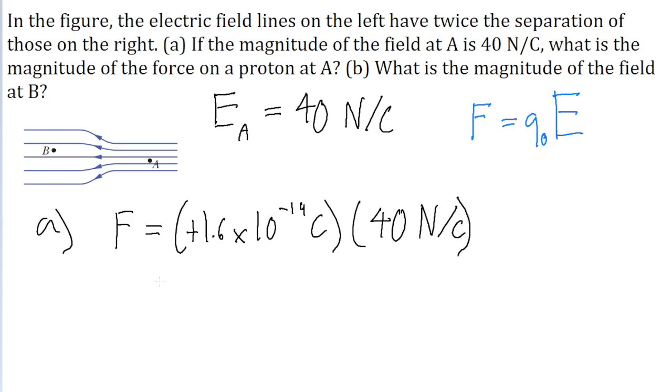If we put this into a calculator, then we find that the force at part A has a magnitude of 6.4 multiplied by 10 to the power of negative 18 newtons. So that is our answer to part A of the problem.